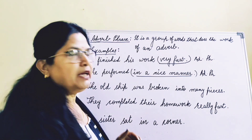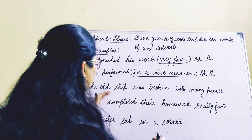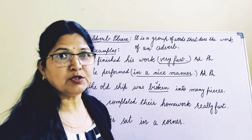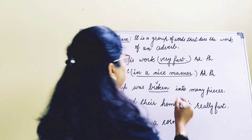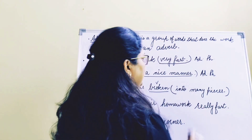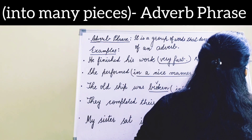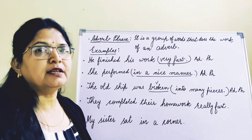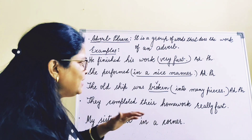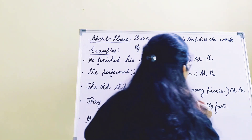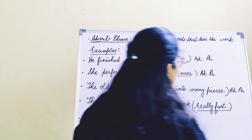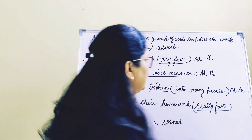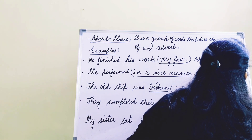Third example: 'The old ship was broken into many pieces.' Old ship was broken — broken is the verb. How was it broken? Into many pieces. So 'into many pieces' is an adverb phrase. Fourth example: 'They completed their homework really fast.' They completed their homework — how? Really fast. This 'really fast' is a group of words working as an adverb in the sentence, so it is an adverb phrase.